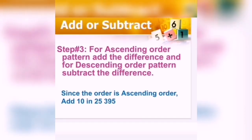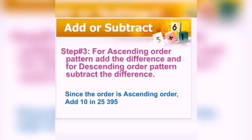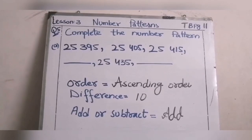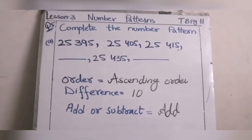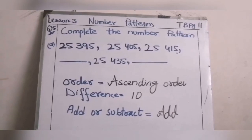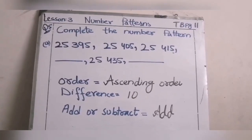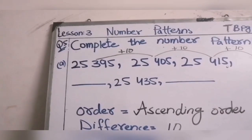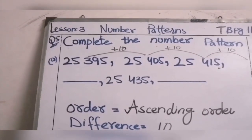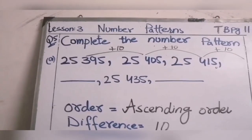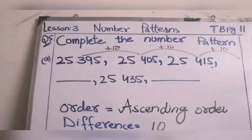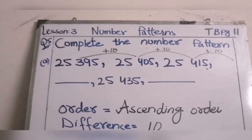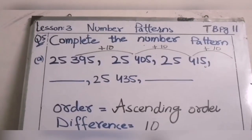Since the order is ascending, we add 10 to 25,395. We conclude: the order is ascending, the difference is 10, and we are going to add 10 to each number. When 10 is added to 25,395 it becomes 25,405, and when we add 10 to 25,405 it becomes 25,415.